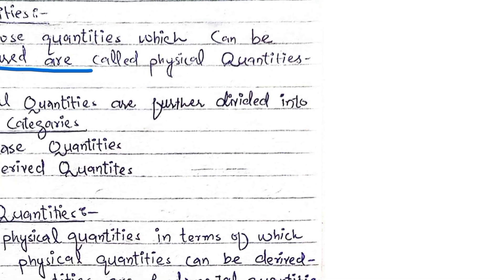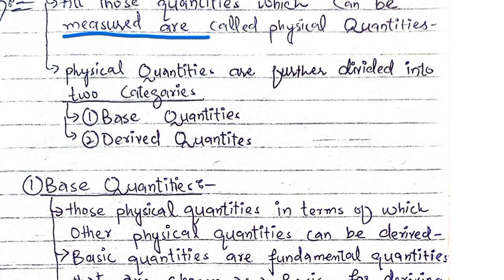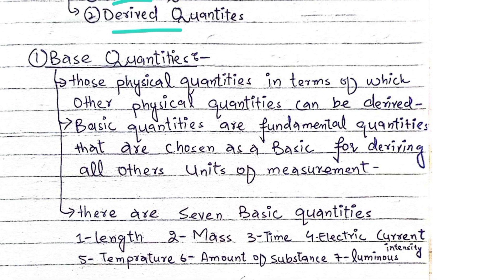Physical quantities can be further divided into two categories, two groups. Physical quantities are divided into two types: base physical quantities and derived physical quantities.